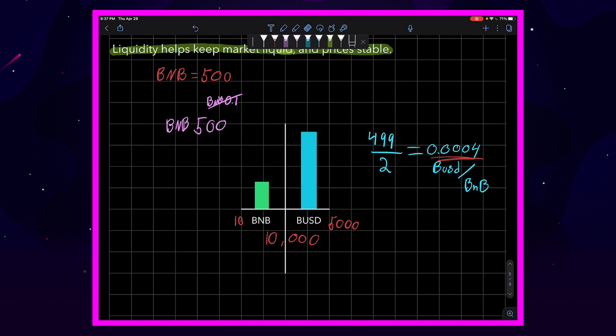Let's clean things up a little bit. Instead of $10,000 of liquidity, let's do $100 million. All right, that would give us 100,000 BNB and 50 million BUSD.